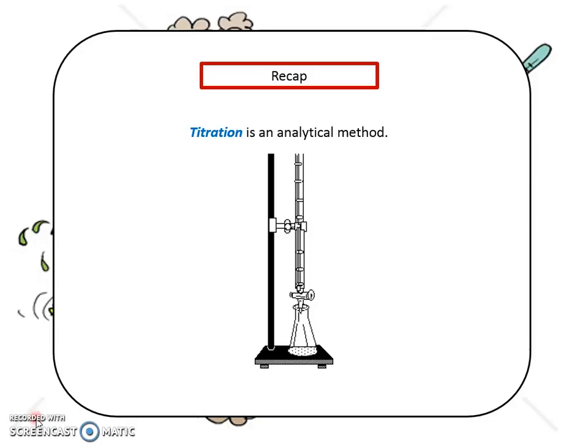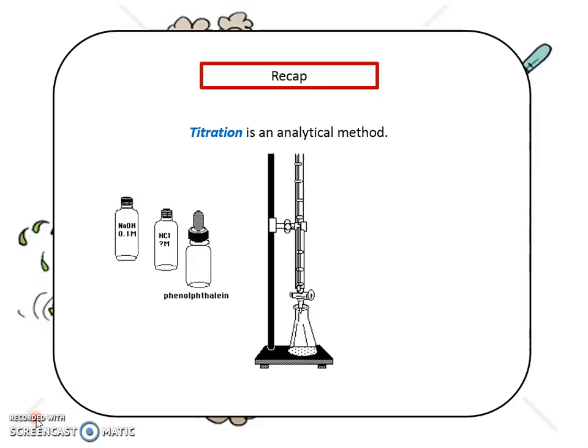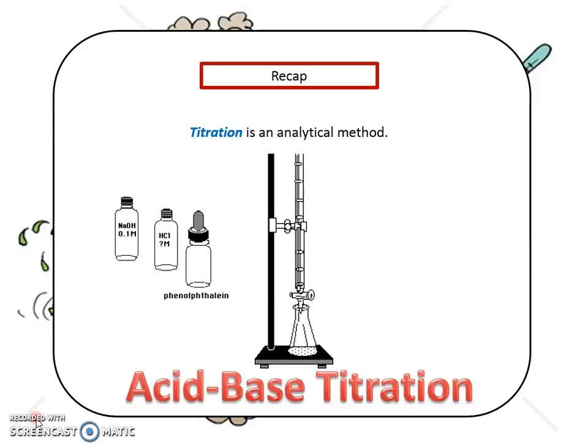The known solution would be called the titrant. From our previous lecture, when you have a base and an acid with an indicator — for example, phenolphthalein — this is an acid and base titration, as the solution involves an acid and a base.